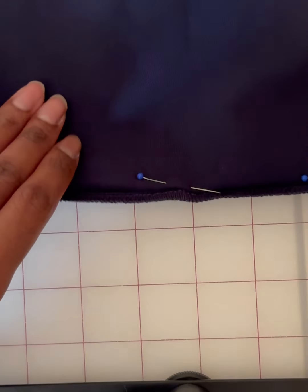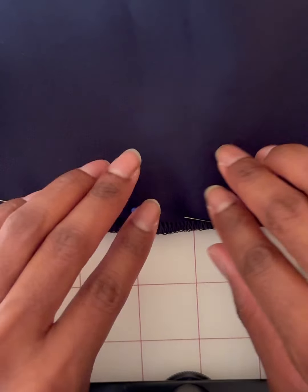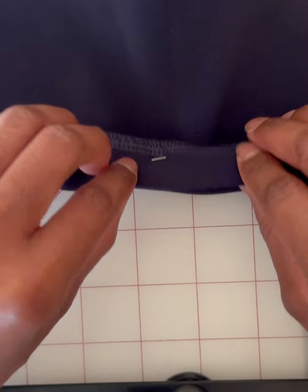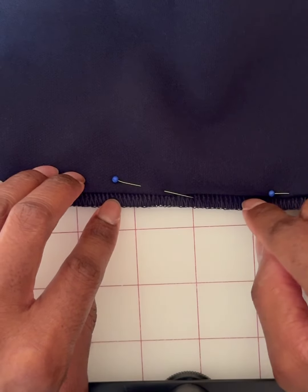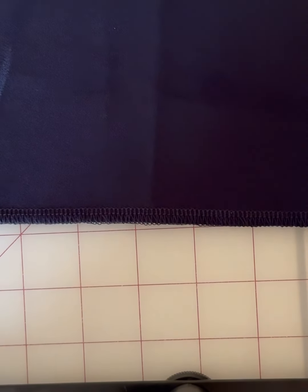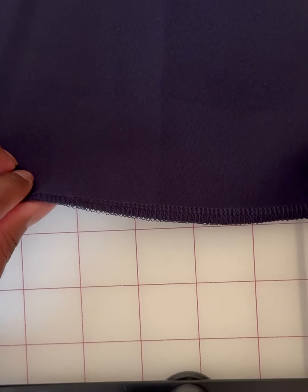Okay, so this is my sleeve. I have prepped it so that I can start my blind hem. I pressed it at one inch and fold it over so it can sew across here. And I'll do the same thing with this one. I just wanted you guys to see how it's folded over.